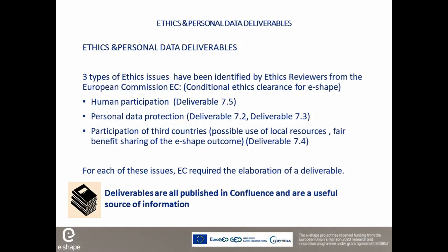Three types of ethics issues have been identified by the ethics reviewer from the EC: human participation, personal data protection, and participation of third countries. They gave conditional ethics clearance for e-shape. For each of these issues, the EC required the elaboration of a deliverable. These deliverables are all published in Confluence and are a useful source of information.